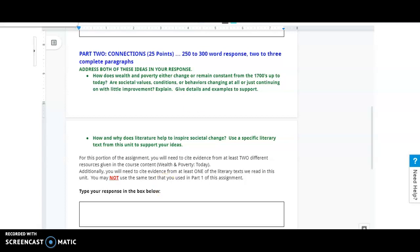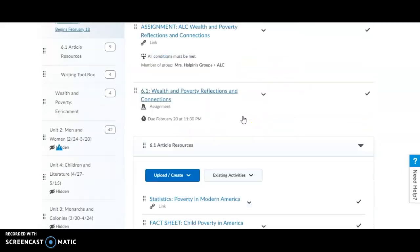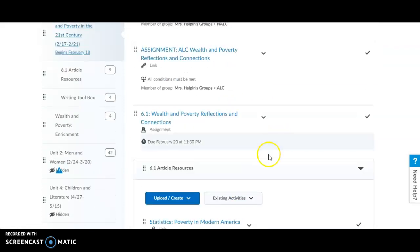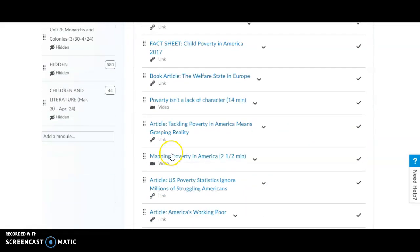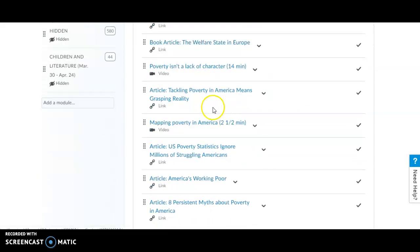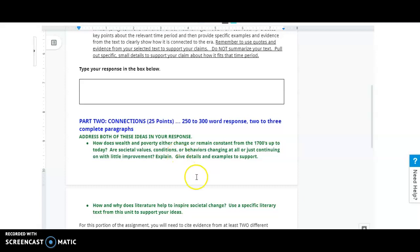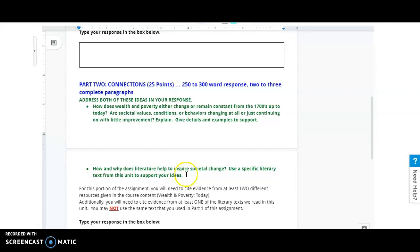Now, you will have to use, for this portion of the assignment, you're going to need to cite evidence from at least two different resources given in the course content. When you go into the course content, you're going to see this module here within week six called Article Resources. And you'll have to pick from, you don't have to read all of these, but you do need to pick two of these resources and cite them within this response. And then, so you'll have to use those to support your ideas.